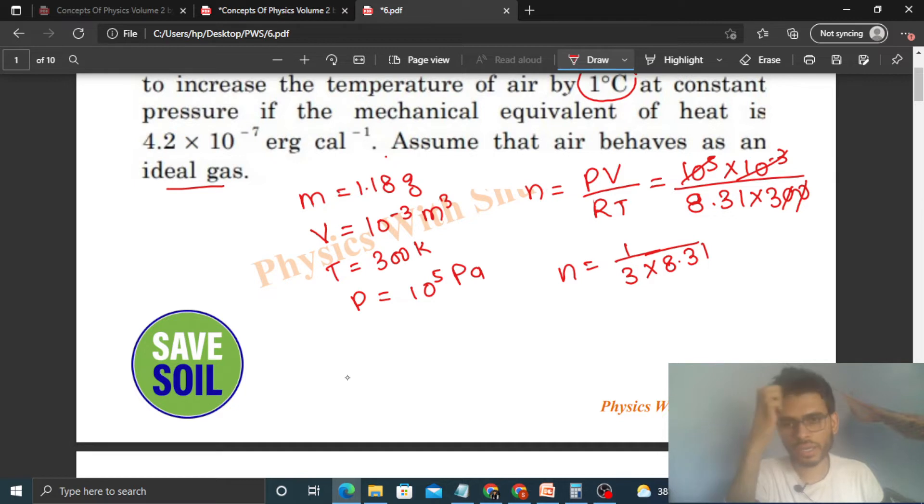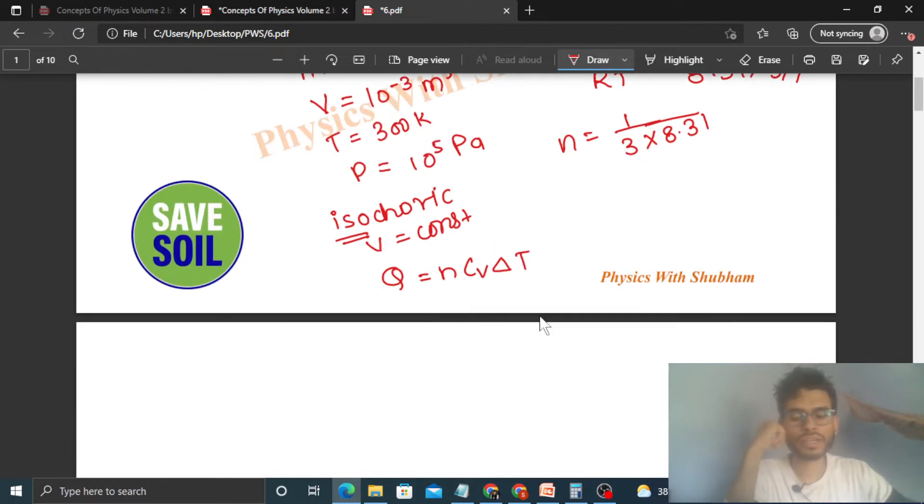Now, we have two processes given. One is isochoric process. Isochoric means where volume is constant and at constant volume we supply heat. So you can see heat is applied in isochoric process Q that will be N Cv delta T. Now what is given, heat is applied at constant volume that is 2 calorie or you can say 2 into 4.2 Joule and increase in temperature that is equal to 1 degree Celsius. When we supply 2 calorie heat at constant volume, then the temperature increases by 1 degree Celsius.